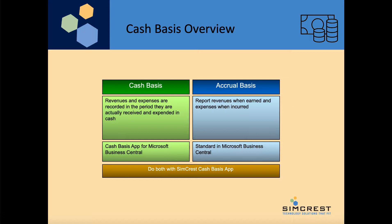Whenever cash is collected, revenue is recognized as having been earned. Expenses are recognized when cash is dispersed. With the Cash Spaces app you will be able to run both accrual and cash basis in Business Central.